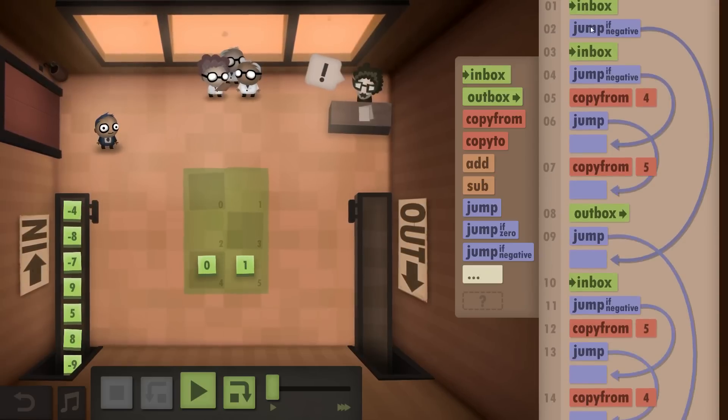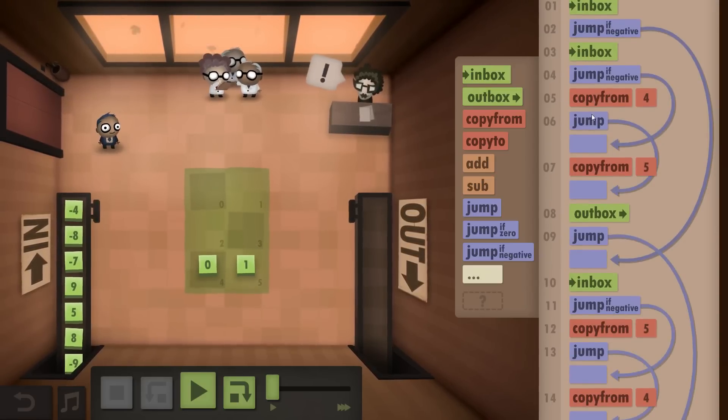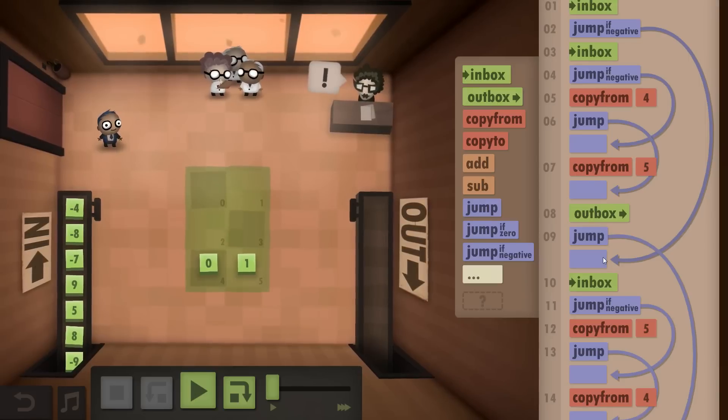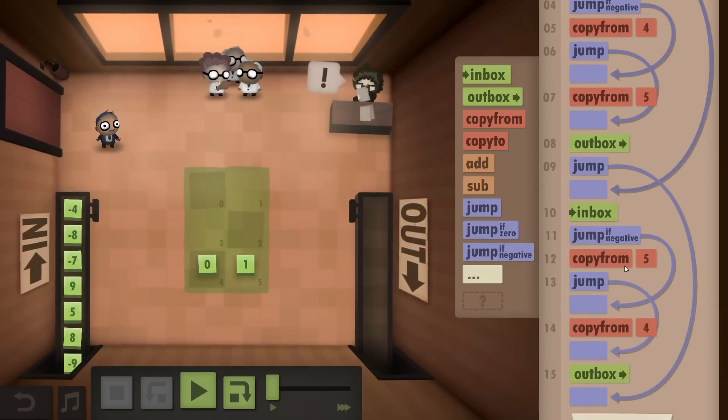So Inbox, jump if negative. Inbox, jump if negative. And then we've got the copy from, copy from. And then essentially we have another block down here which has two copy from commands and Outbox commands.